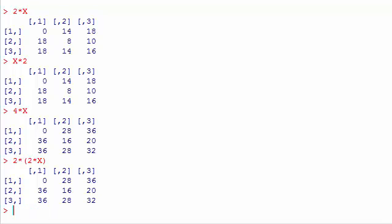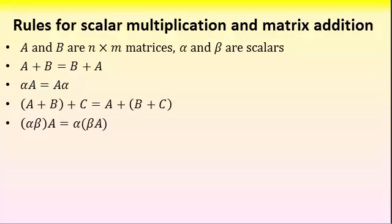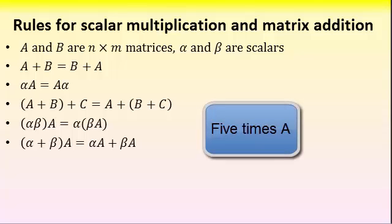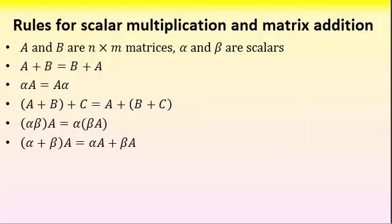That will give you exactly the same result. We also have two distributive laws. The first one tells us that scalar multiplication distributes over scalar addition. For example, say that alpha is 2 and beta is 3, then it tells us that if I do 6 times A, and A is any matrix, I will get the same thing if I do 2 times A and to that add 3 times A.